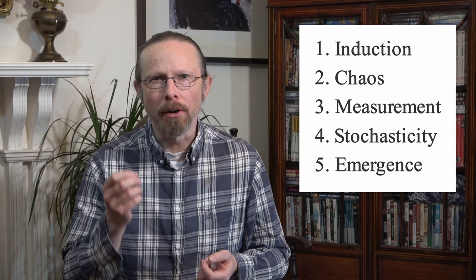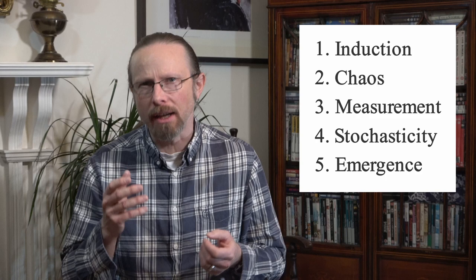In other videos, I will explore some further limits on rationality that come from logic and computation. But here, we've looked at five key problems that put hard limits on our ability to use rational calculations to make accurate predictions and forecasts about the future: the problems of induction, chaos, measurement, stochasticity, and emergence. These limits have implications for our use of rationality in our daily discourse, especially because we so often have reasons to argue about the consequences of our choices. Politics and economics are all about trying to choose policies that will have the best impact on the future of society. But human societies are one of the most complex, chaotic, evolving systems we know about.